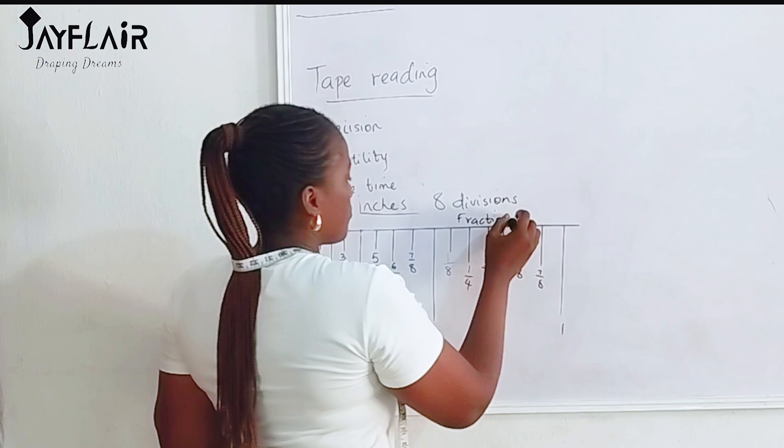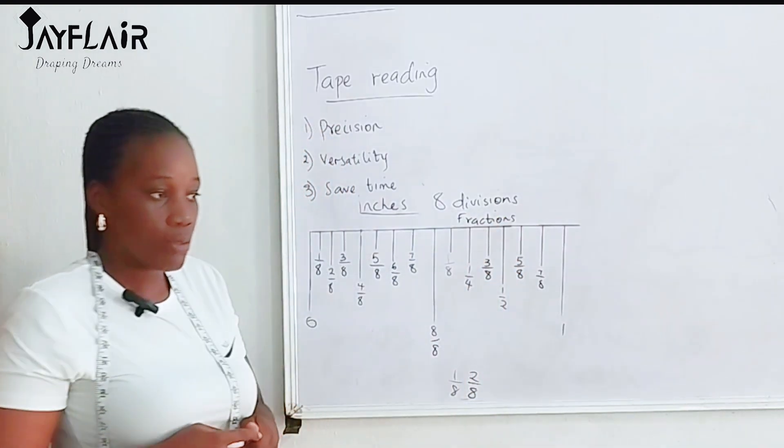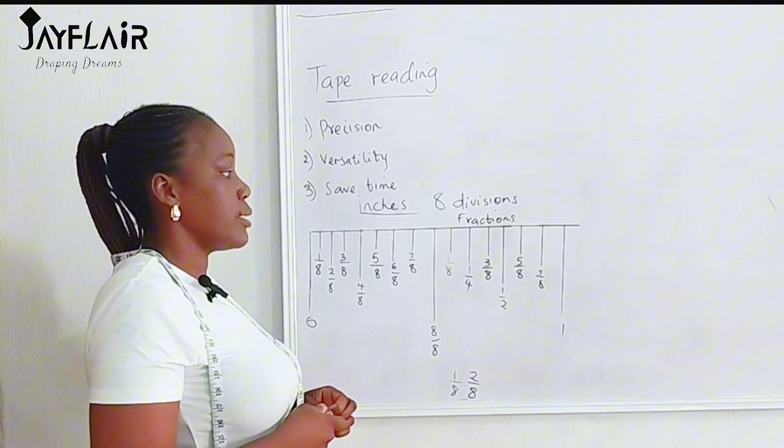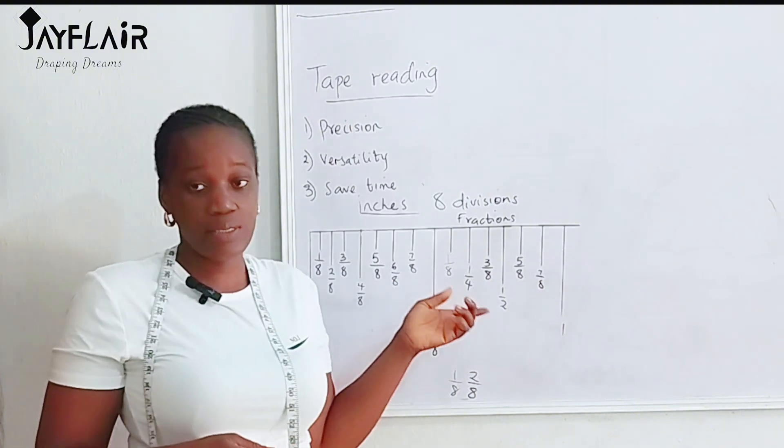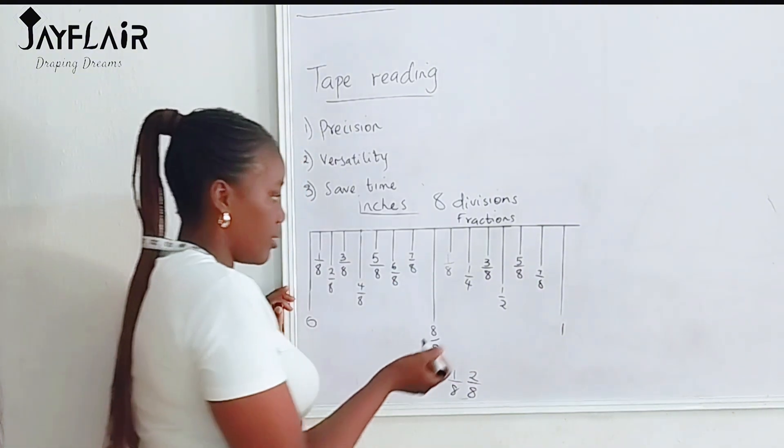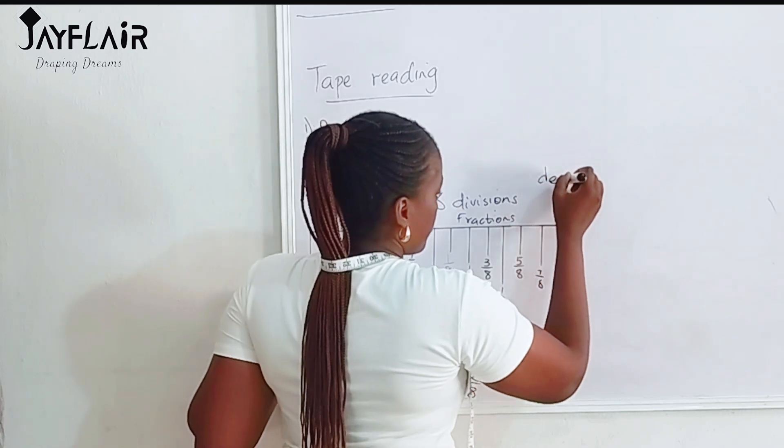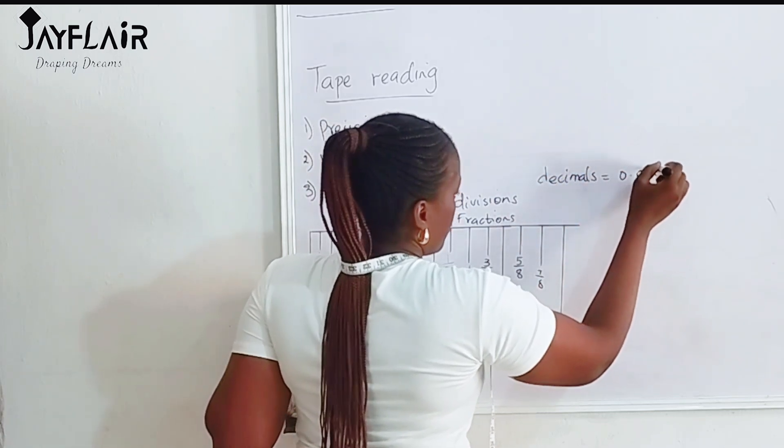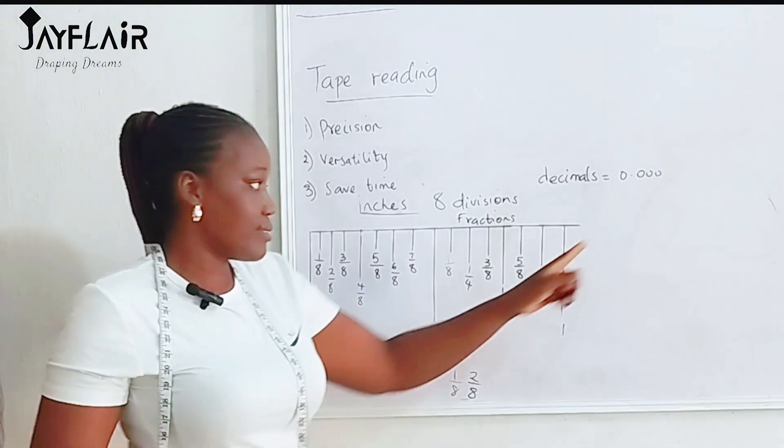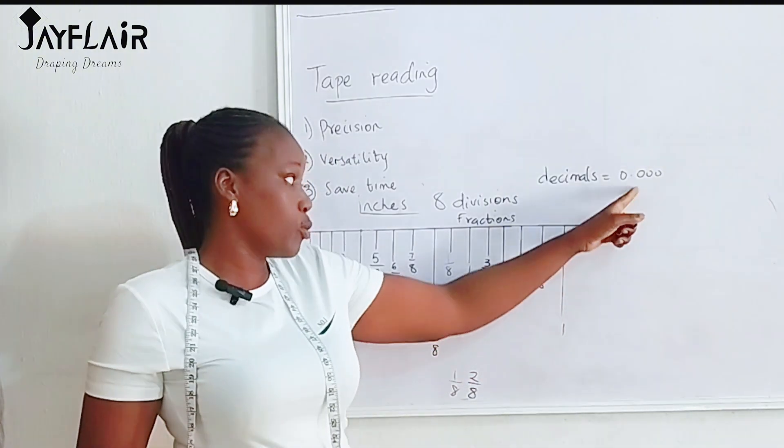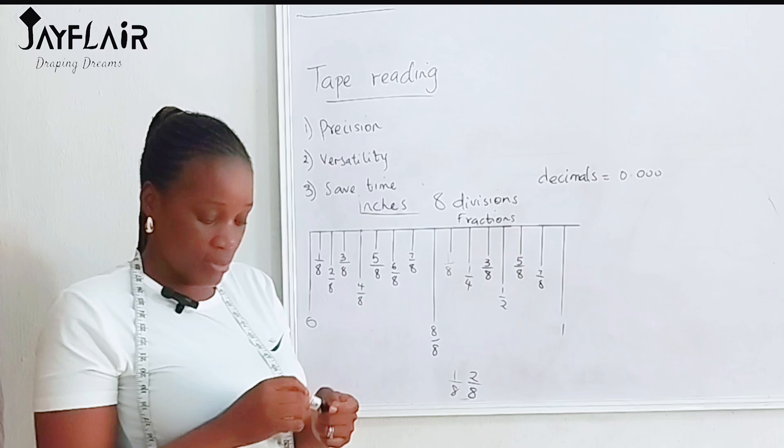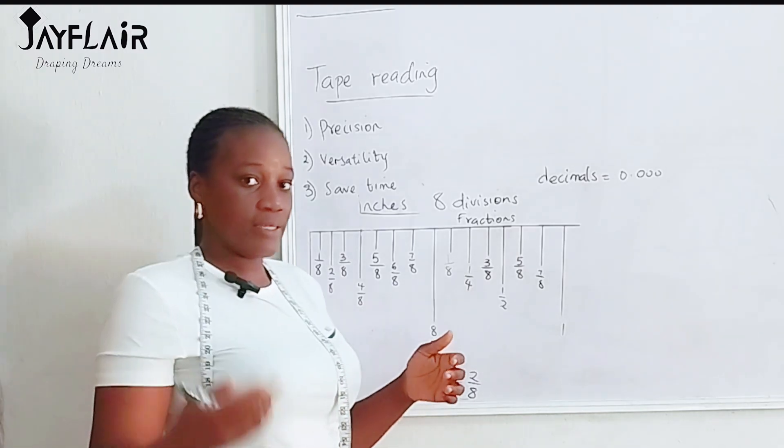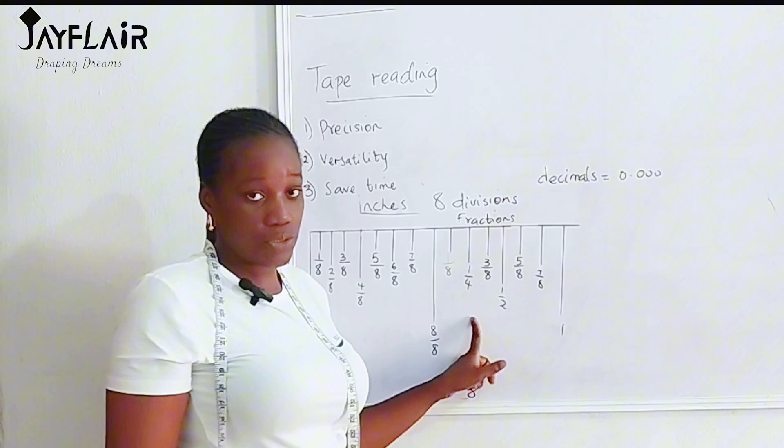But most times when we work, when we draft pattern, we usually get our answers in decimals. What I mean by decimals is 0.000, whatever. This is decimal. This is what most calculators will give, except for those higher scientific calculators, advanced scientific calculators that will give you fractions.